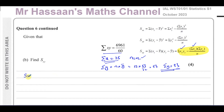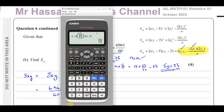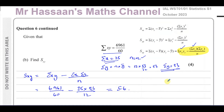So we have everything we need to find SXY. SXY equals 6961 over 60 minus 25 times 53 over 12. That gives us 28 over 5, which we can write as 5.6. So SXY equals 5.6, and that's the answer to part B.